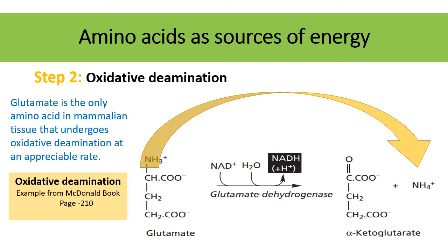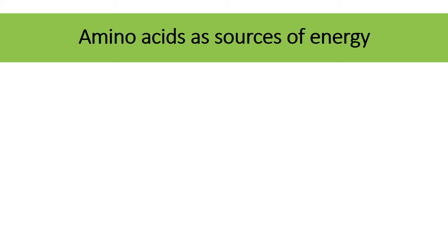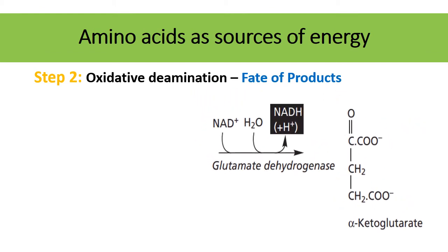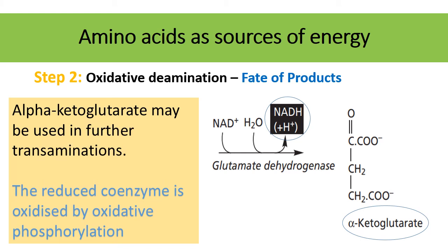The alpha-ketoglutarate produced may be further utilized in transamination processes, and the reduced coenzyme NADH is oxidized by oxidative phosphorylation. During oxidative deamination there is production of alpha-ketoglutarate, ammonia, and reducing equivalents.